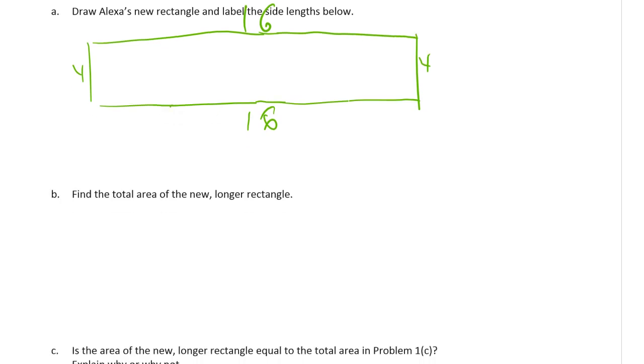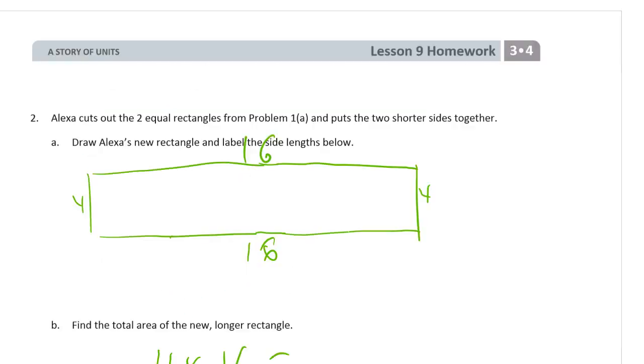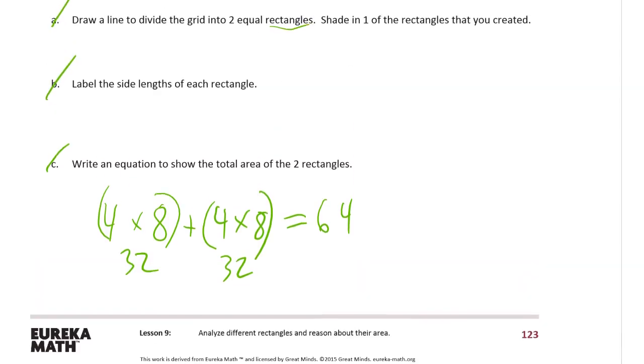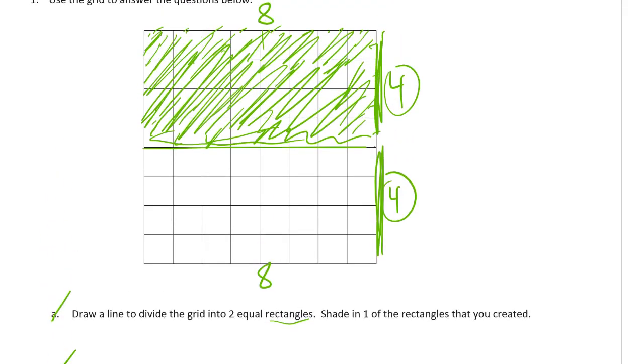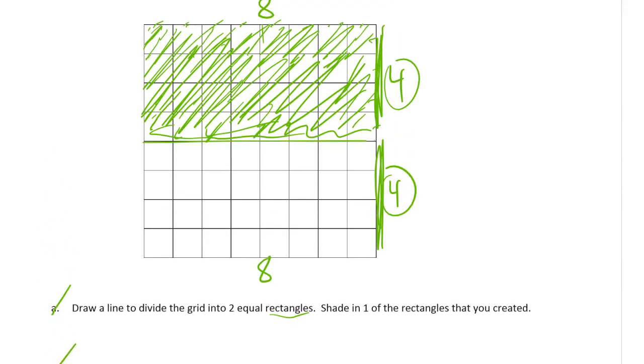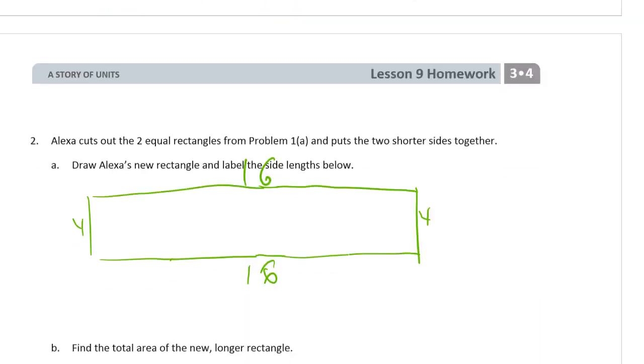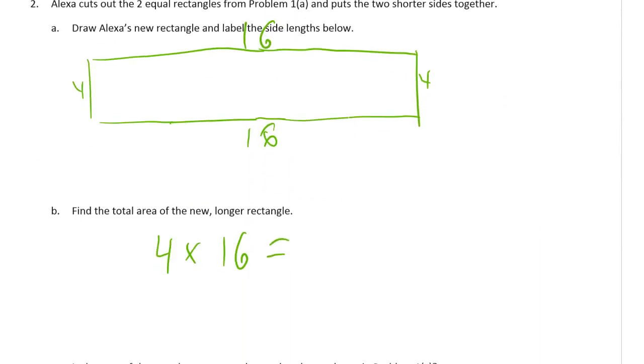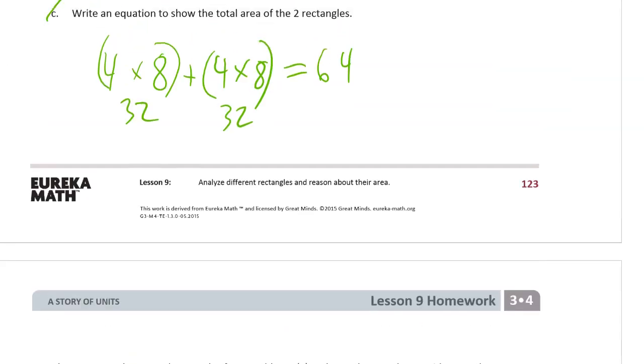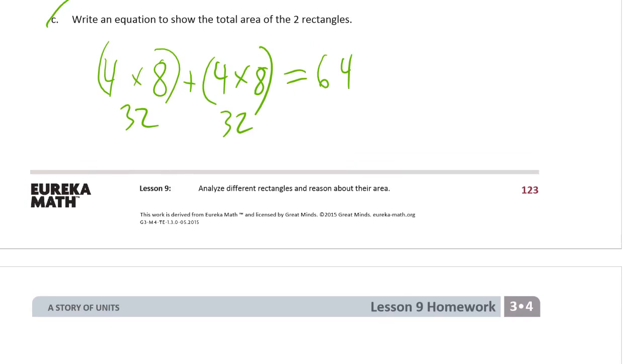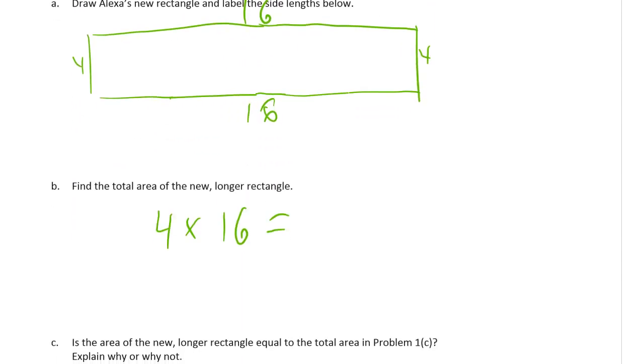And the area of the new longer rectangle is four times 16, which equals, we know what it is because we did it already for part C. It's the same two rectangles added together, 32 plus 32 is 64, right? So it has to be, whether it's four times 16 or four times eight plus four times eight, no matter how you figure it out, it's the same area.